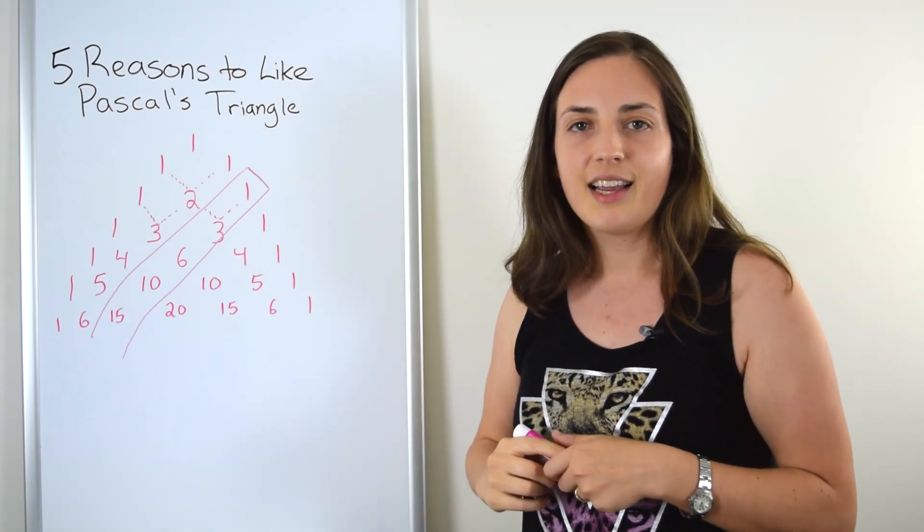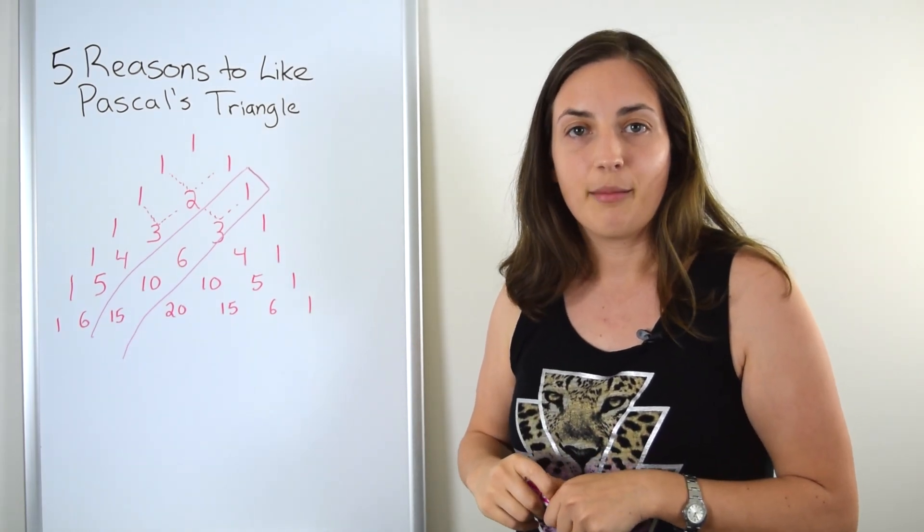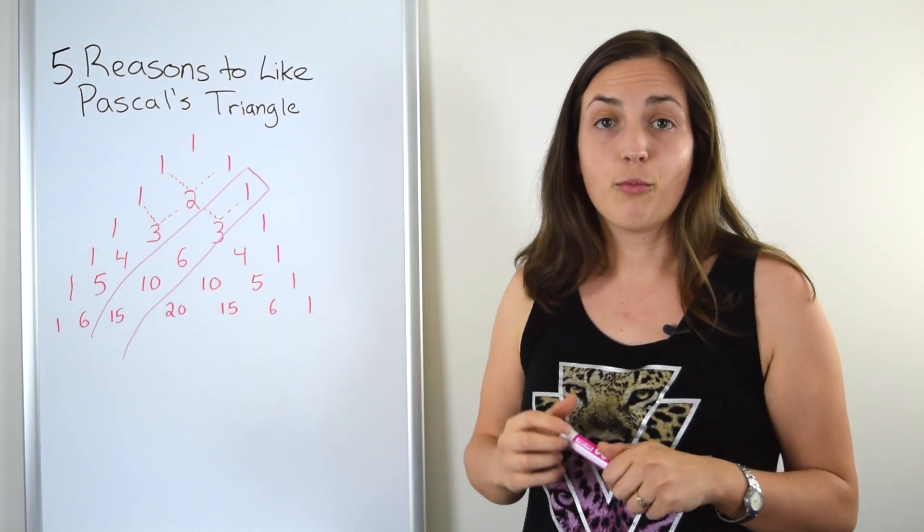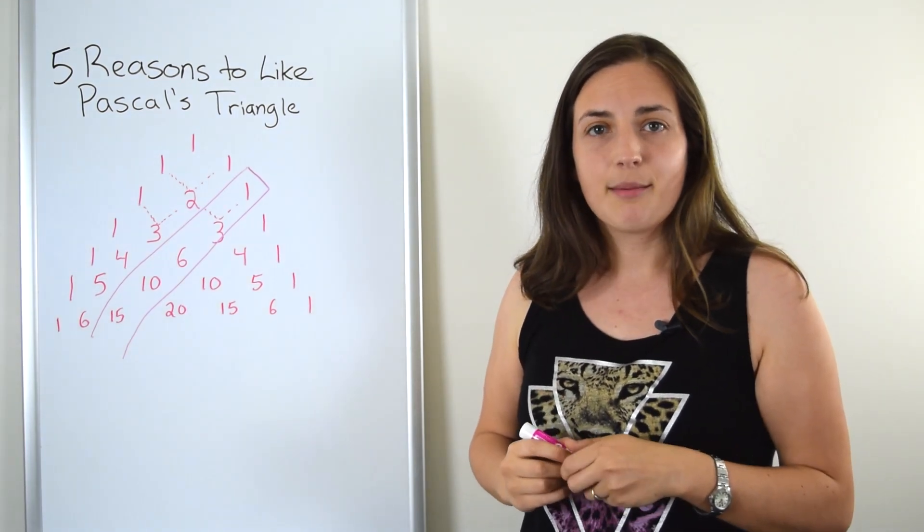The numbers on the third diagonal are what are called triangle numbers. Triangle numbers are the numbers that can be drawn in a pictorial form which makes a triangle. So let's think about what that would be.